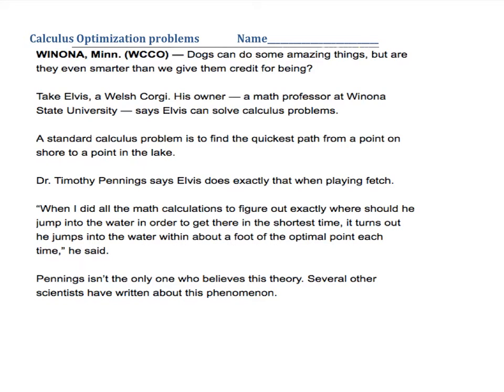Hi, this is Optimization Problems, and we're going to look at a dog who can optimize. And so in this article, and it used to be a video, but they've taken it down, there's a dog named Elvis, which is a Welsh corgi. And then his owner, who's a math professor, said that his dog can solve calculus problems.